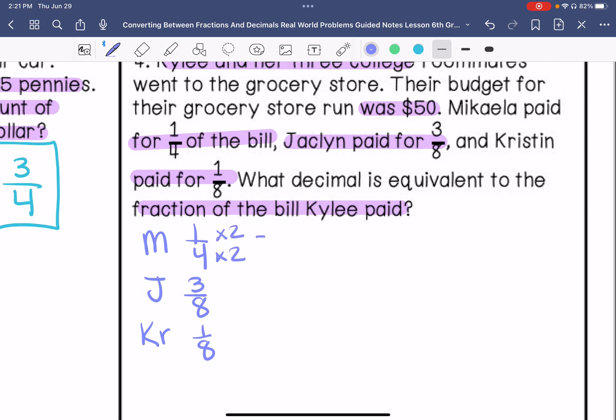We have to have this as a common denominator. So two plus three is five, so total of six-eighths, so that means Kylie paid two-eighths. And then we have to figure out the decimal for that.